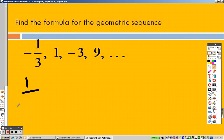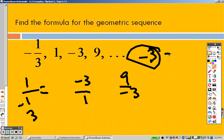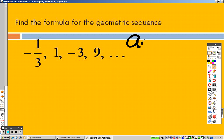All right, 1 divided by negative 1 third. Negative 3 divided by 1 and 9 divided by negative 3. Guess what? They all are negative 3, which means that's what r is. So I now know that r is negative 3.